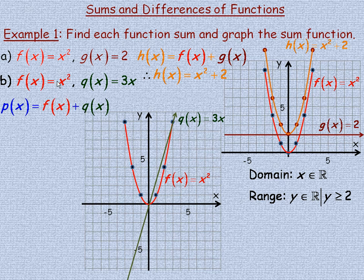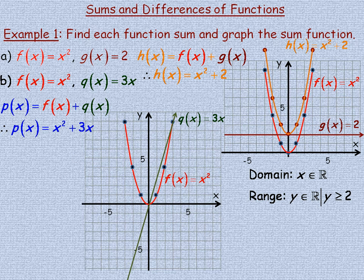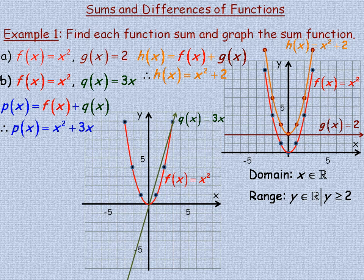In example B, the functions we're adding are x squared and 3x — f of x and q of x. We'll call the sum function p of x, so p of x is x squared plus 3x. If we were subtracting these functions instead, p of x would simply be x squared minus 3x. To graph them, for each x coordinate you add the two corresponding y coordinates of the original two functions.